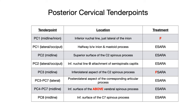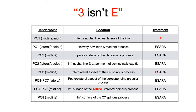To remember the exceptions: for PC3, remember that 'three isn't E' — all the others are extension, but three isn't. For PC1, just say 'F PC1' — it's an expletive mnemonic meaning the treatment is just F, plain flexion. Bleep PC1.